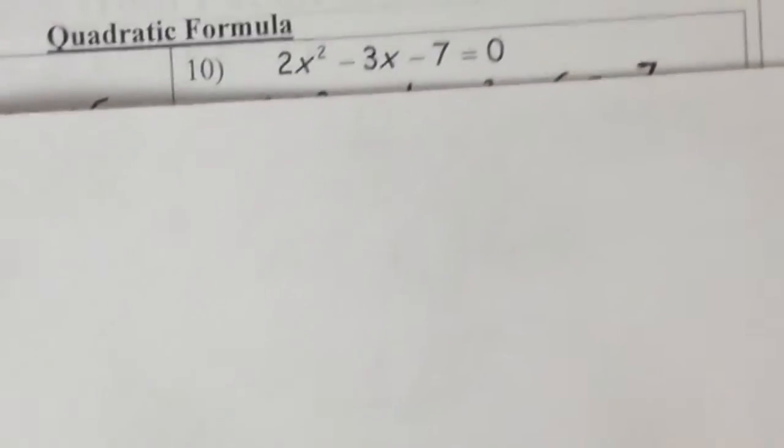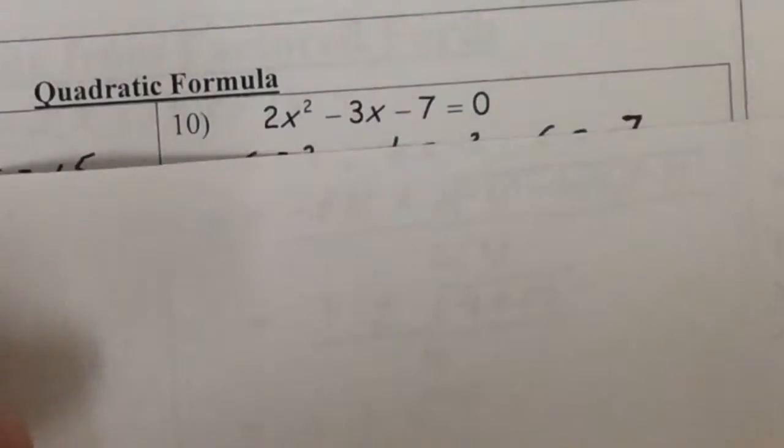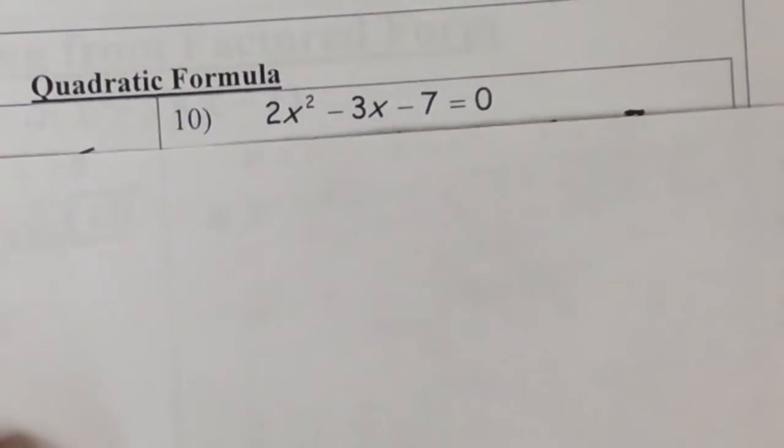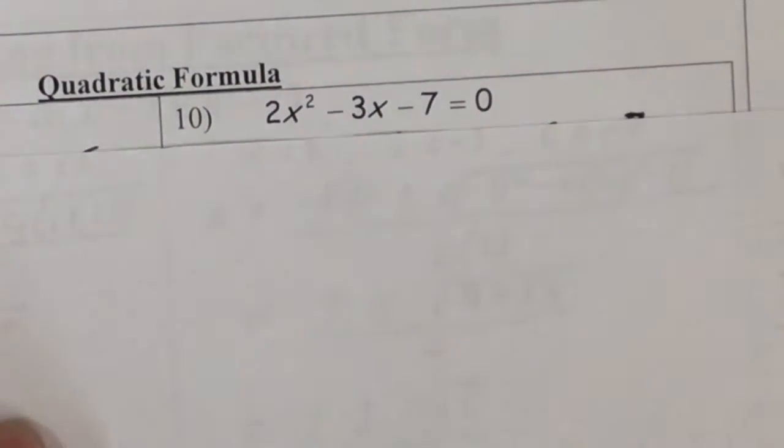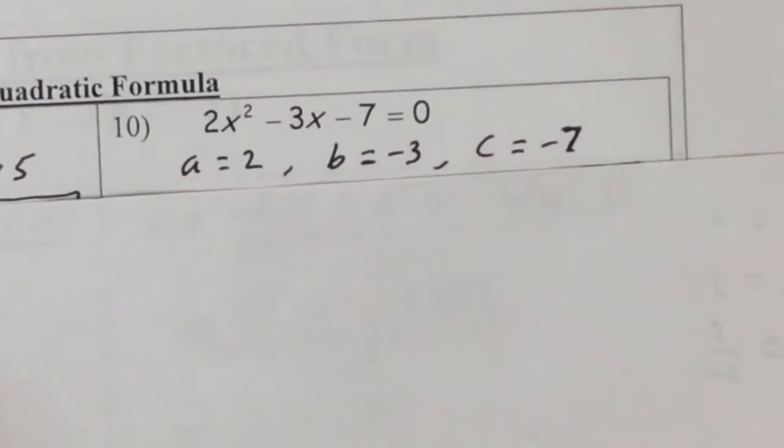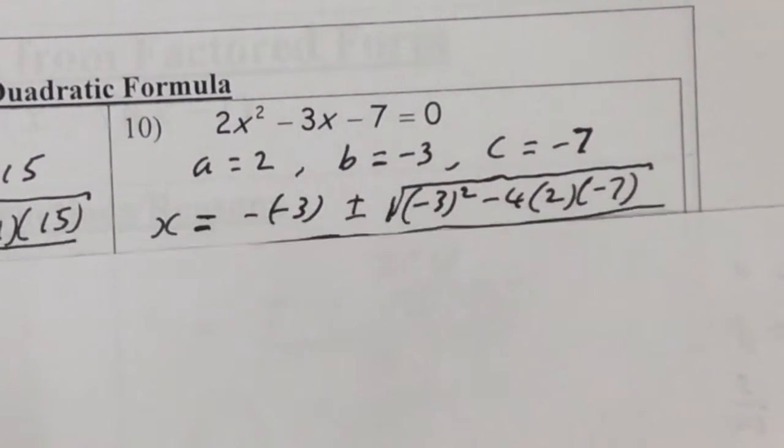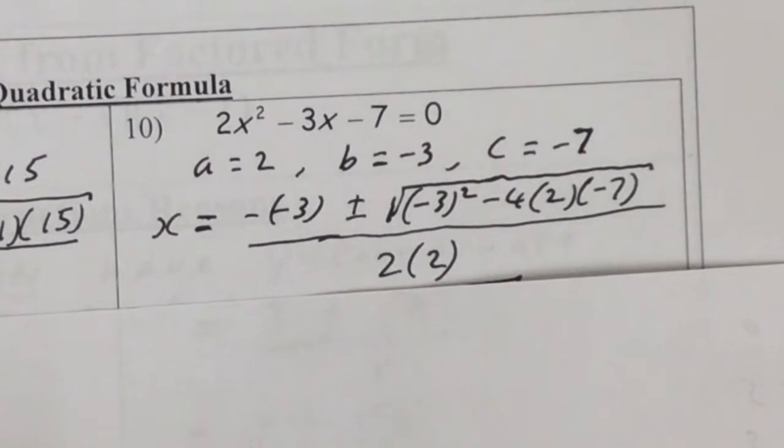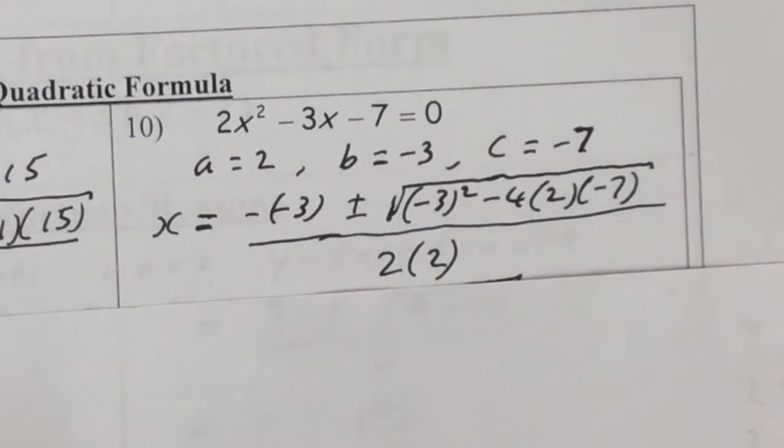So here's one that you can't do by factoring. So here, a is 2, b is negative 3, c is negative 7. Plugging the numbers in just like this. Try it out. See if you can evaluate those and simplify it.